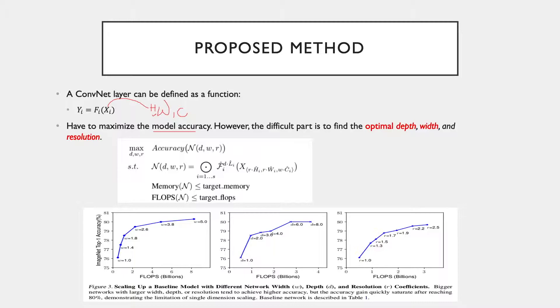So we'll first talk about depth. Intuitively, deeper convolutional networks can capture richer and more complex features and generalize well on new tasks. However, deep networks are also very difficult to train due to the vanishing gradient issue. Although several techniques such as skip connections and batch normalization have been devised in recent years to alleviate the training issue, it creates diminishing returns on the accuracy side.